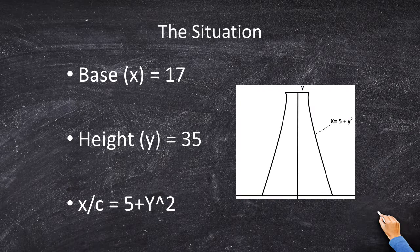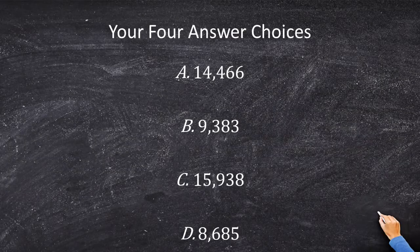We've got three different variables here: a base, a height, and a formula — the parameter is 10 minus the square root of y. How are we going to plug this in and come up with some answers? We have four possible choices: 14,466 cubic feet, 9,383 cubic feet, 15,938 cubic feet, and 8,685 cubic feet.